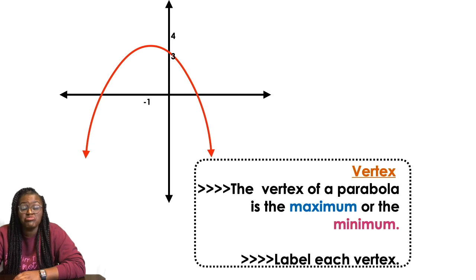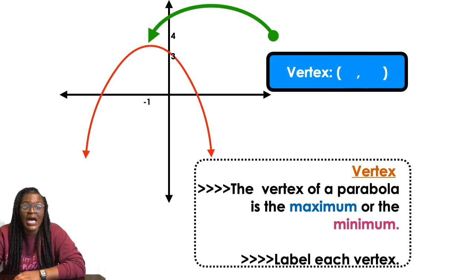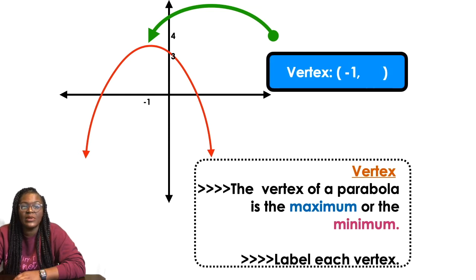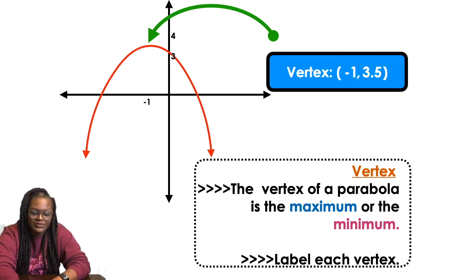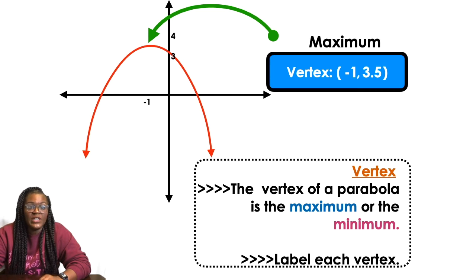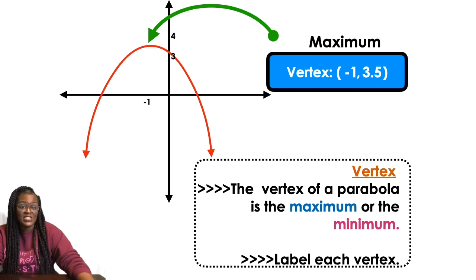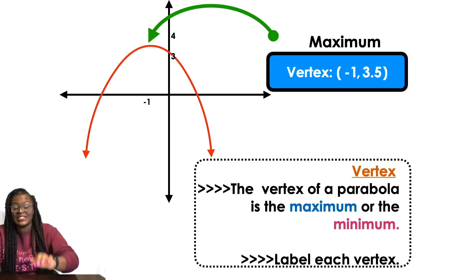So now we have this parabola which is a frowny face, but it has a high point. And that high point is right there, and we're gonna say that that's negative 1 comma 3.5, because you're over the negative 1 and you're up to the 3.5. So this one is a maximum. Why is this one a maximum? Because it's a high point.